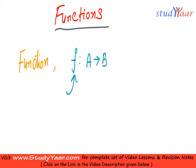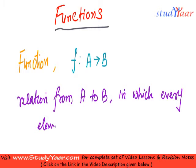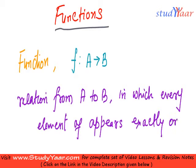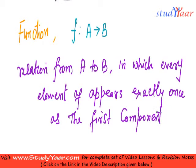Function f from A to B. We define a function as a relation from A to B in which every element of A appears exactly once as the first component of the ordered pair. Let us understand what this means.